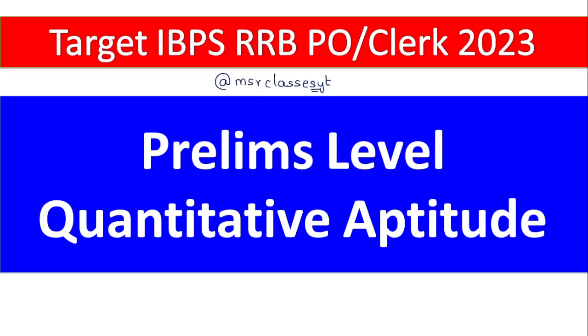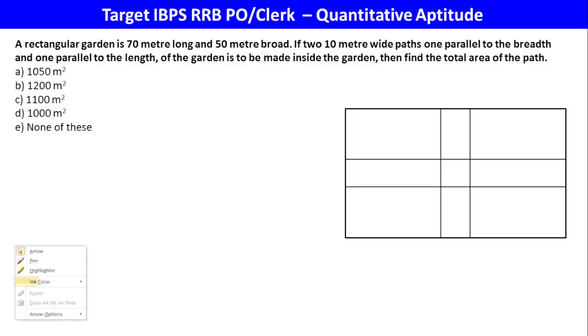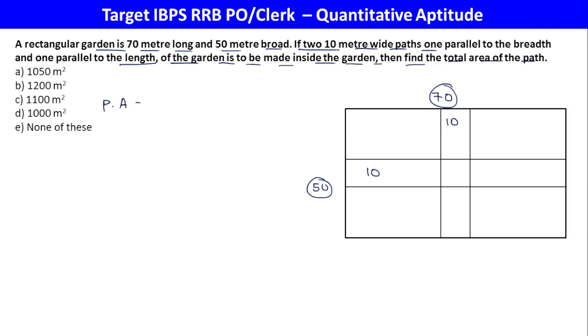Here is the first question of this session. A rectangular garden is 70 meters long and 50 meters broad. If two 10 meter wide paths, one parallel to the breadth and one parallel to the length, are made inside the garden, then find the total area of the path.